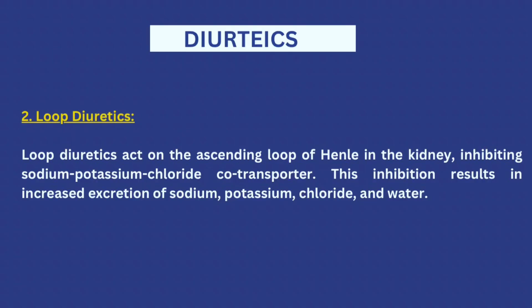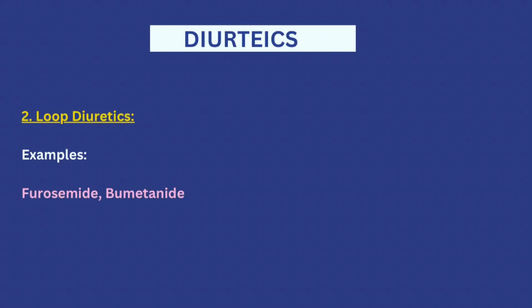The next type of diuretics are the loop diuretics. Just from the name 'loop,' they act on the part of the nephron called the loop of Henle, and what they do is stop the reabsorption of sodium, potassium, chloride, and water, causing the body to excrete a lot of them in urine. Common examples of loop diuretics are furosemide and bumetanide.